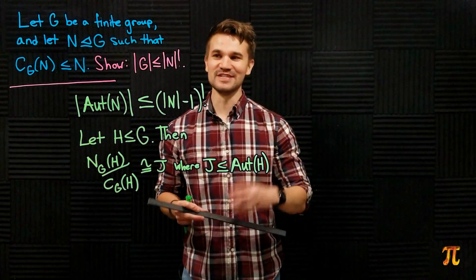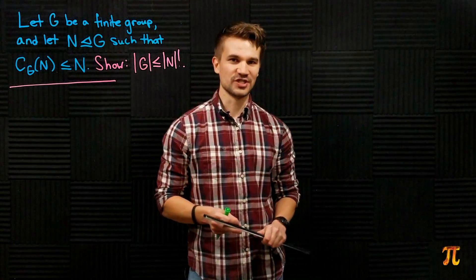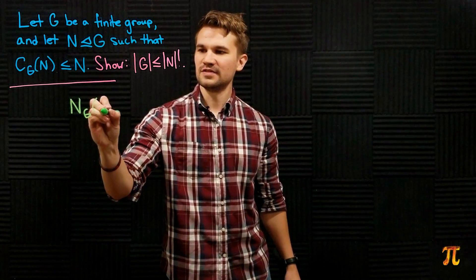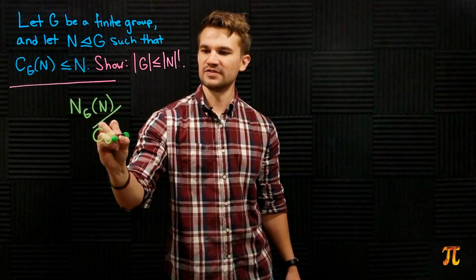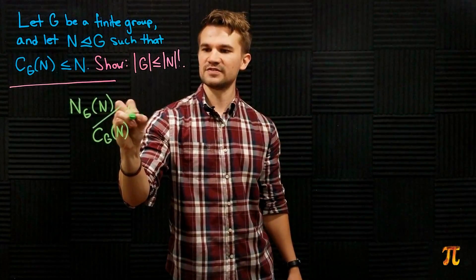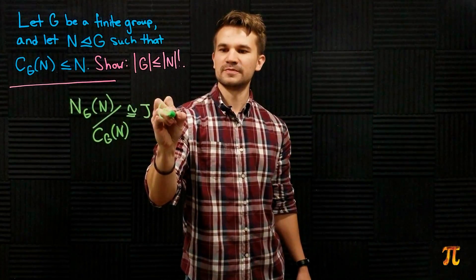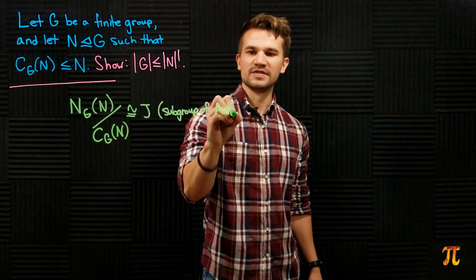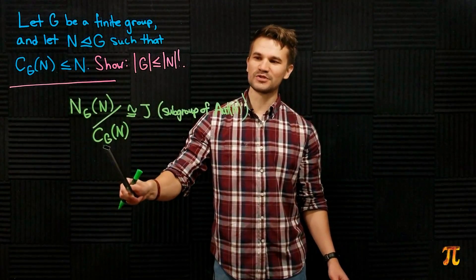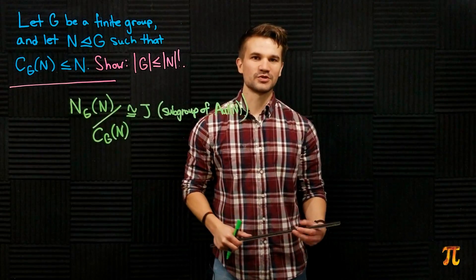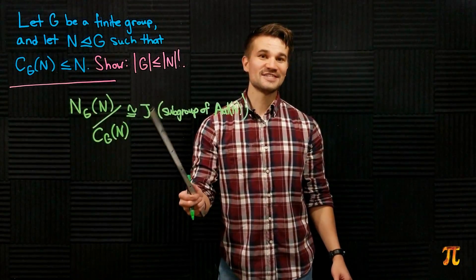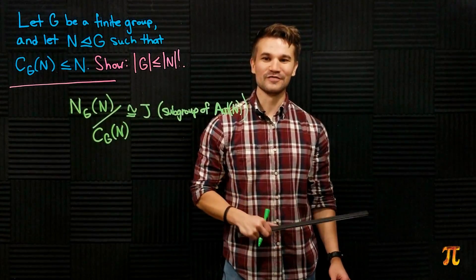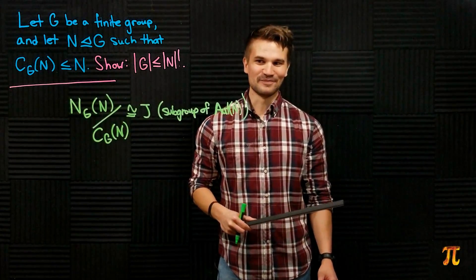Let's begin by applying that second statement to the subgroup N of G. Since N is a subgroup of G, we have that N_G(N) / C_G(N) is isomorphic to J, where J is some subgroup of Aut(N). Since this quotient group is isomorphic to J, its order equals the order of J, and since J is a subgroup of Aut(N), the order of J is less than or equal to the order of Aut(N).